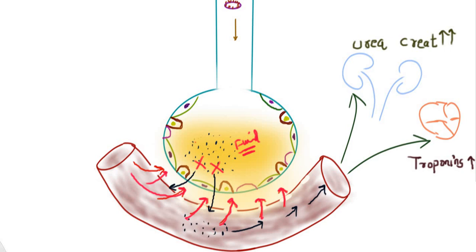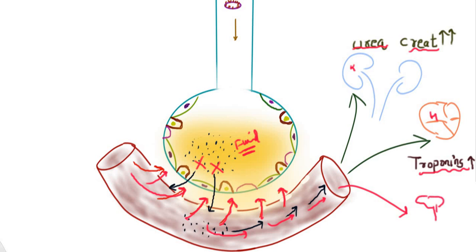The cytokines also enter the systemic circulation via the blood vessels, reaching virtually every organ in the body. The primarily affected organs are the kidneys — evidenced by elevated blood urea nitrogen and creatinine — and the heart, evidenced by elevated troponins. These cytokines also reach the hypothalamus, where they raise body temperature, causing fever.